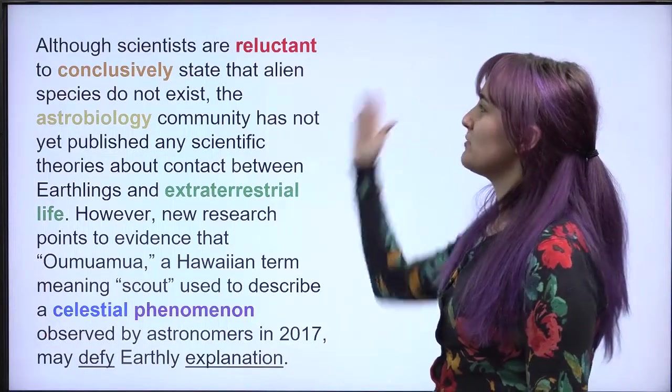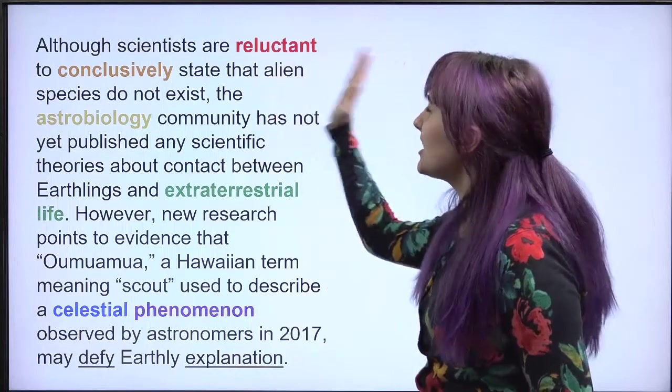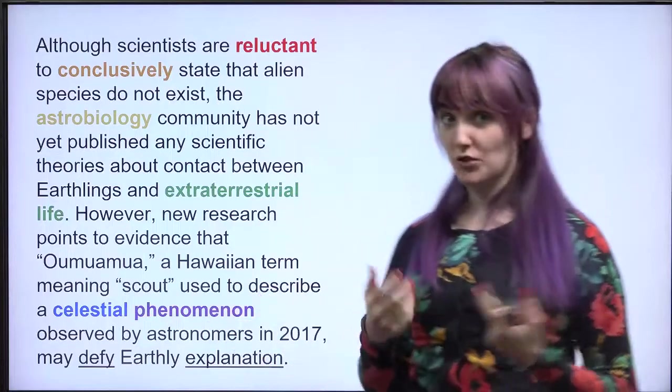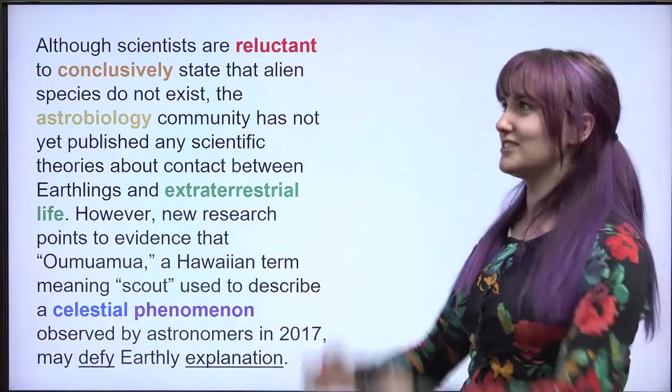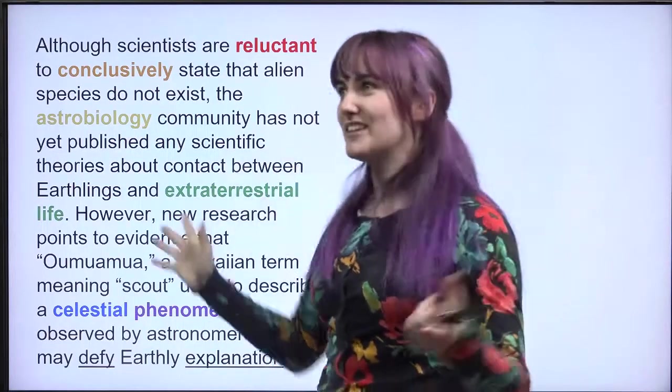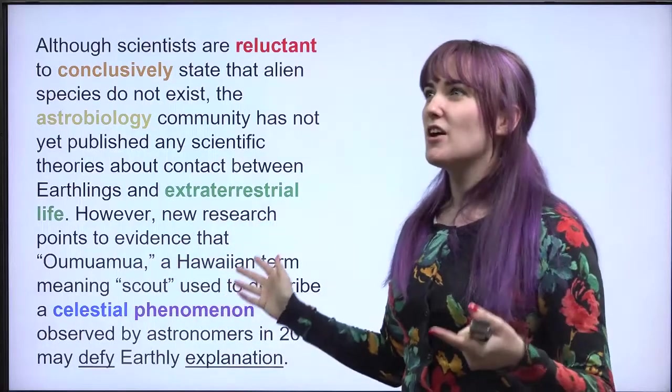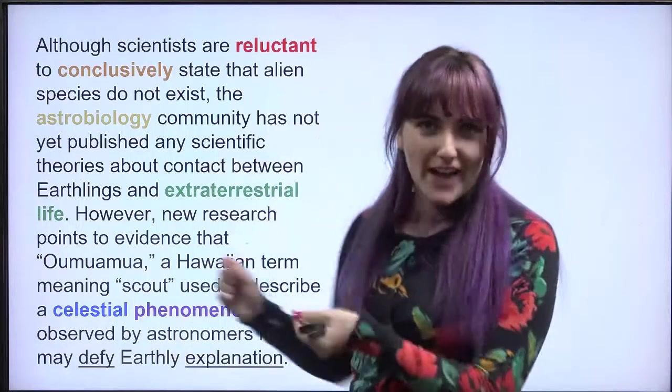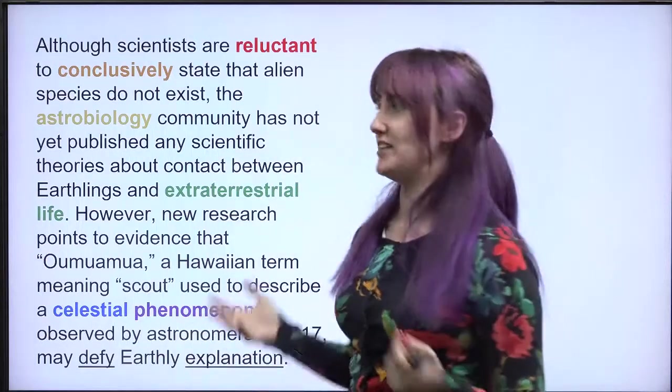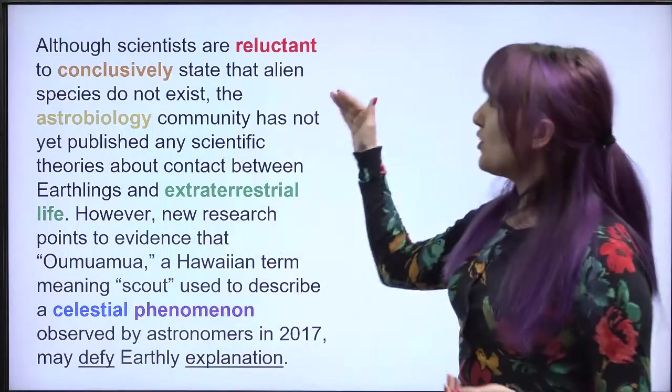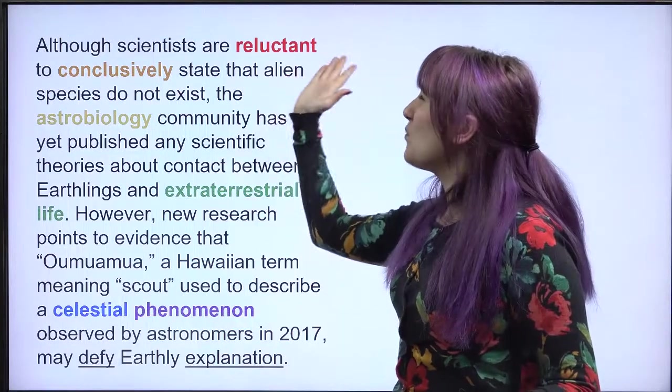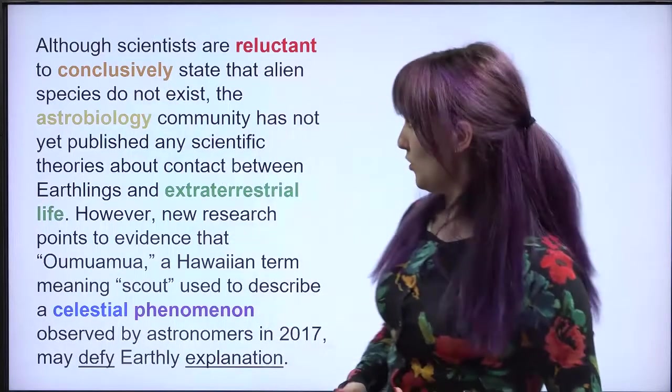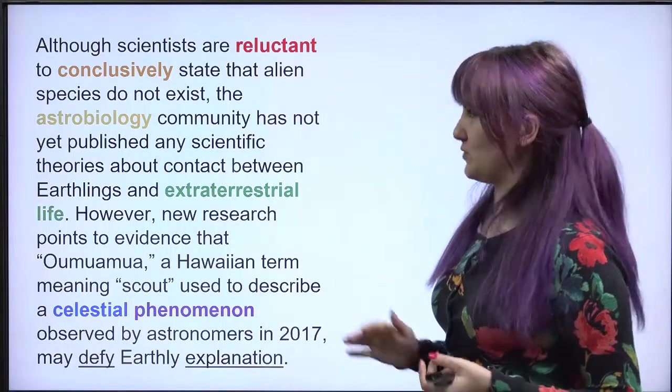As I said at the beginning, scientists are reluctant to conclusively say that alien species don't exist, because that's something that's really difficult to prove, right? Especially since the universe is so humongous. It's really hard to say that something isn't there, because there's no way to check every single atom to make sure that alien species do not exist. So these scientists, they're reluctant, they don't want to conclusively or 절대적으로 state that alien species do not exist.